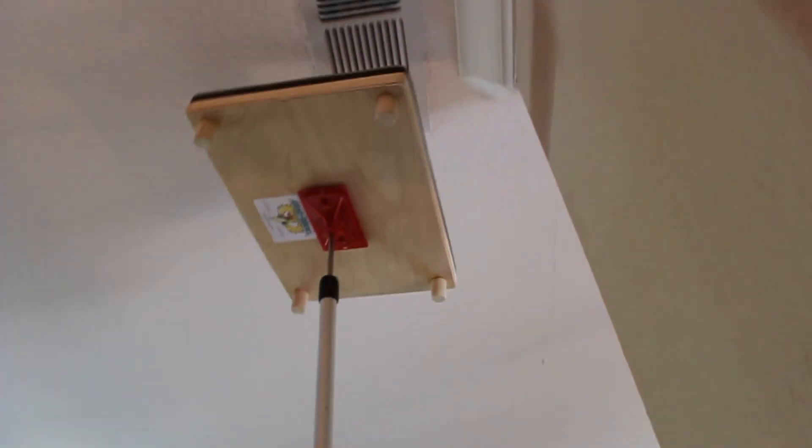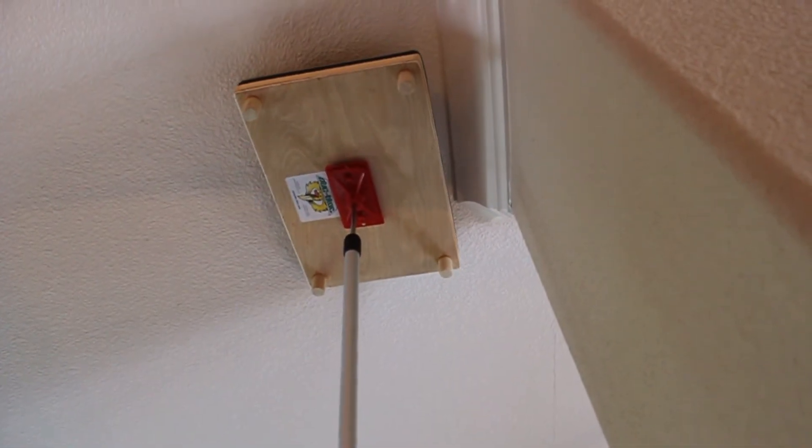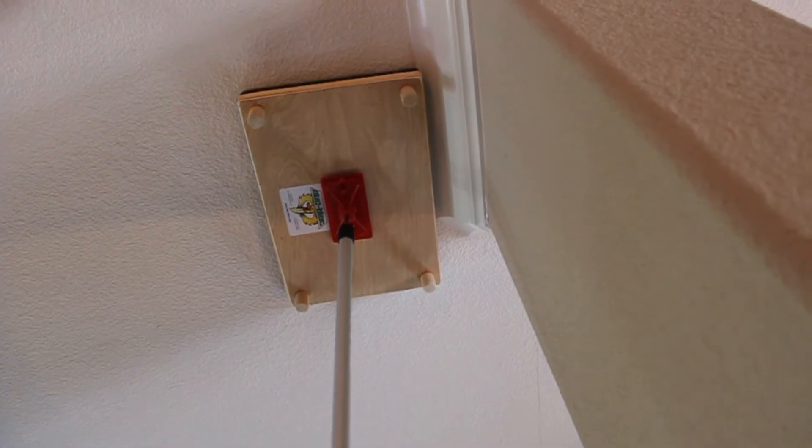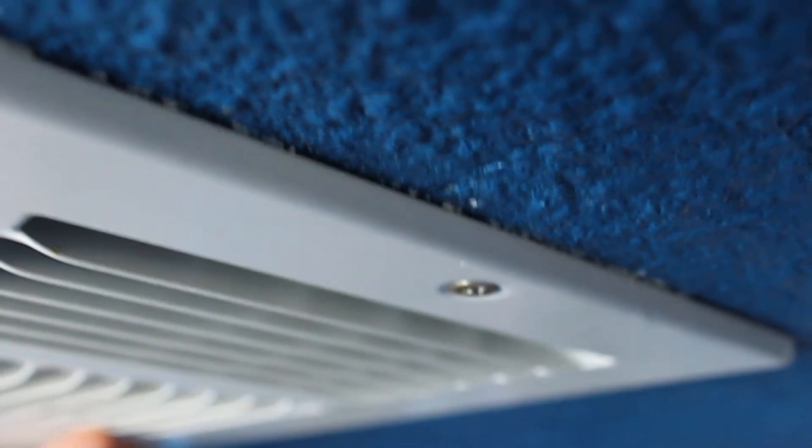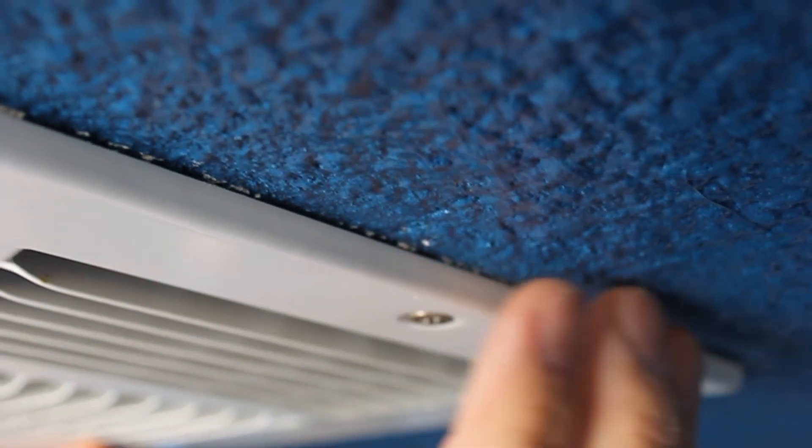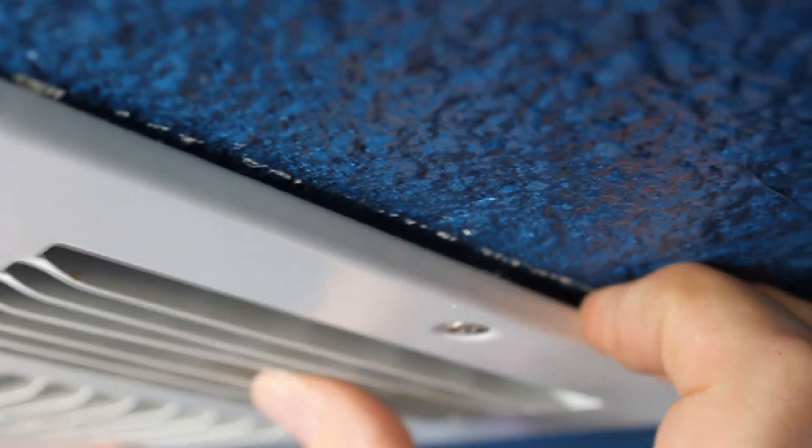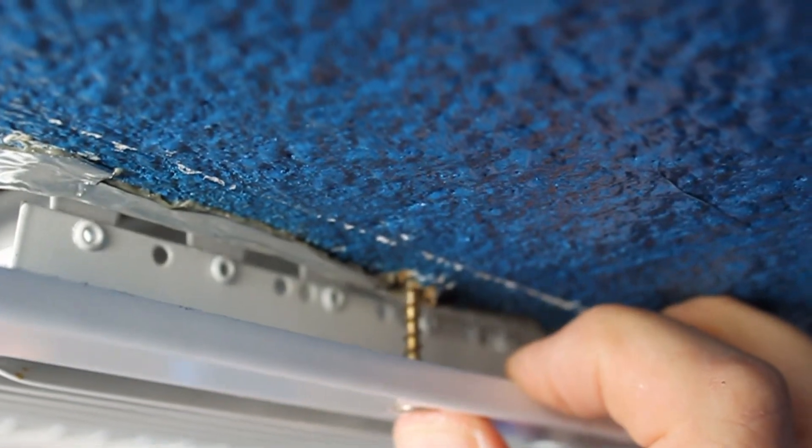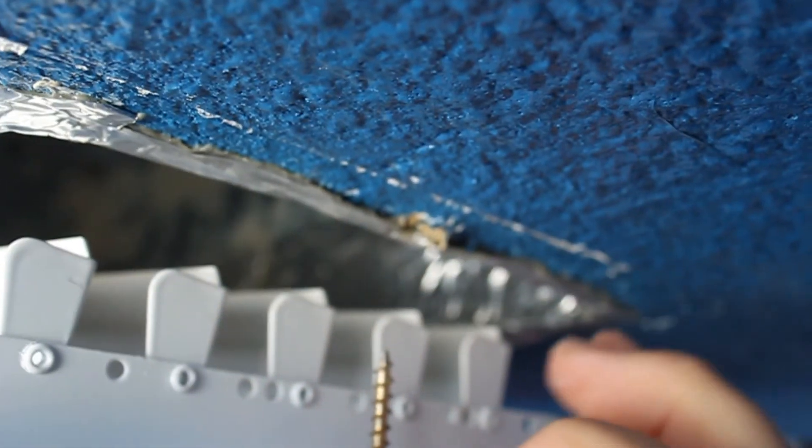The main advantage of duck blocks over other register sealing devices on the market is that duck blocks are braced against the floor and push up against the ceiling rather than pulling on the register. Some registers are only held on by a couple screws going into sheetrock. That's not much to support the weight and pull of the device plus the 50 pascals of pressure being exerted on it.